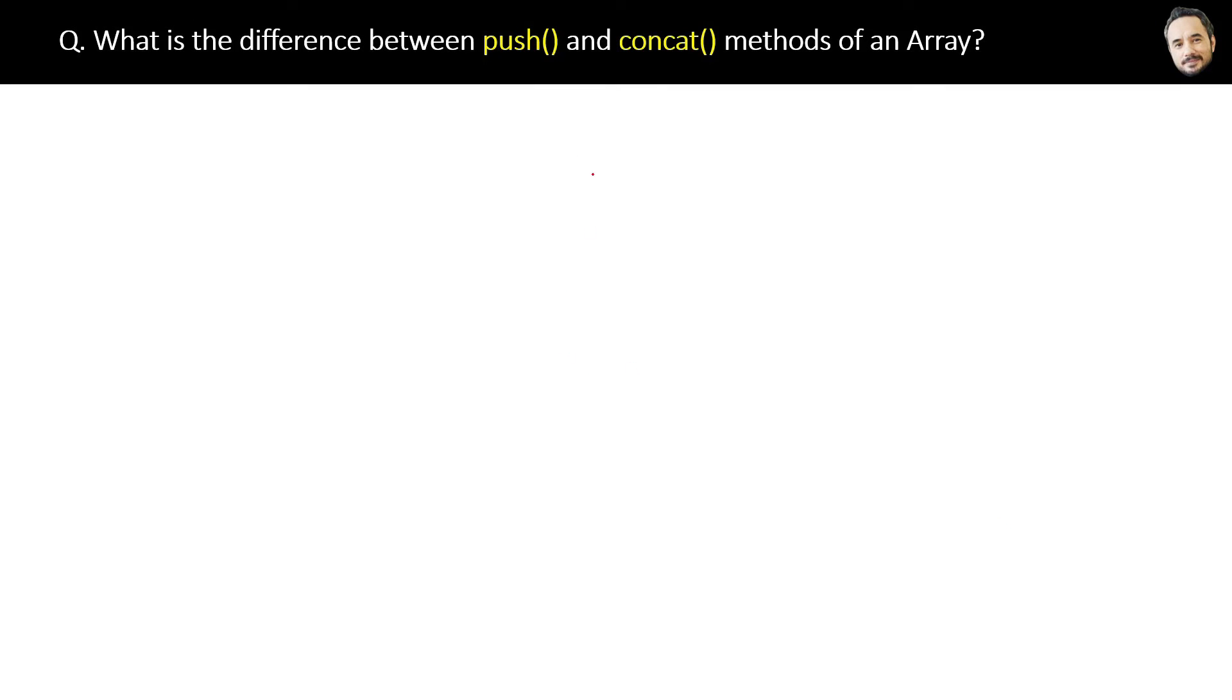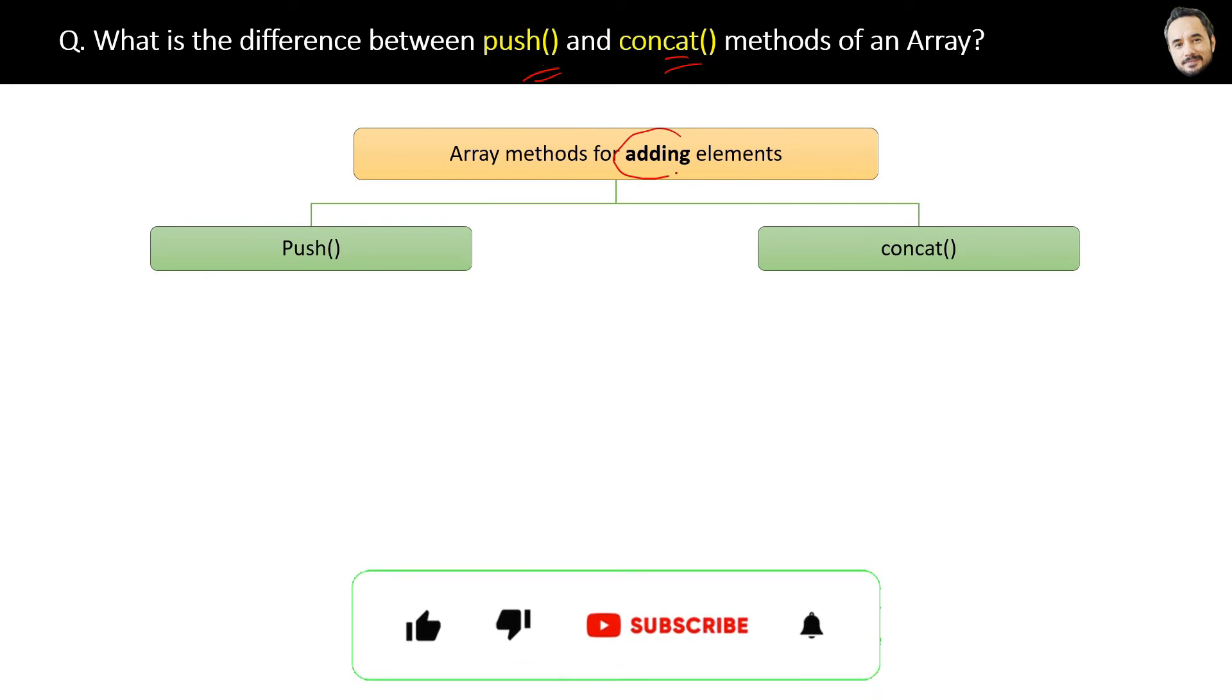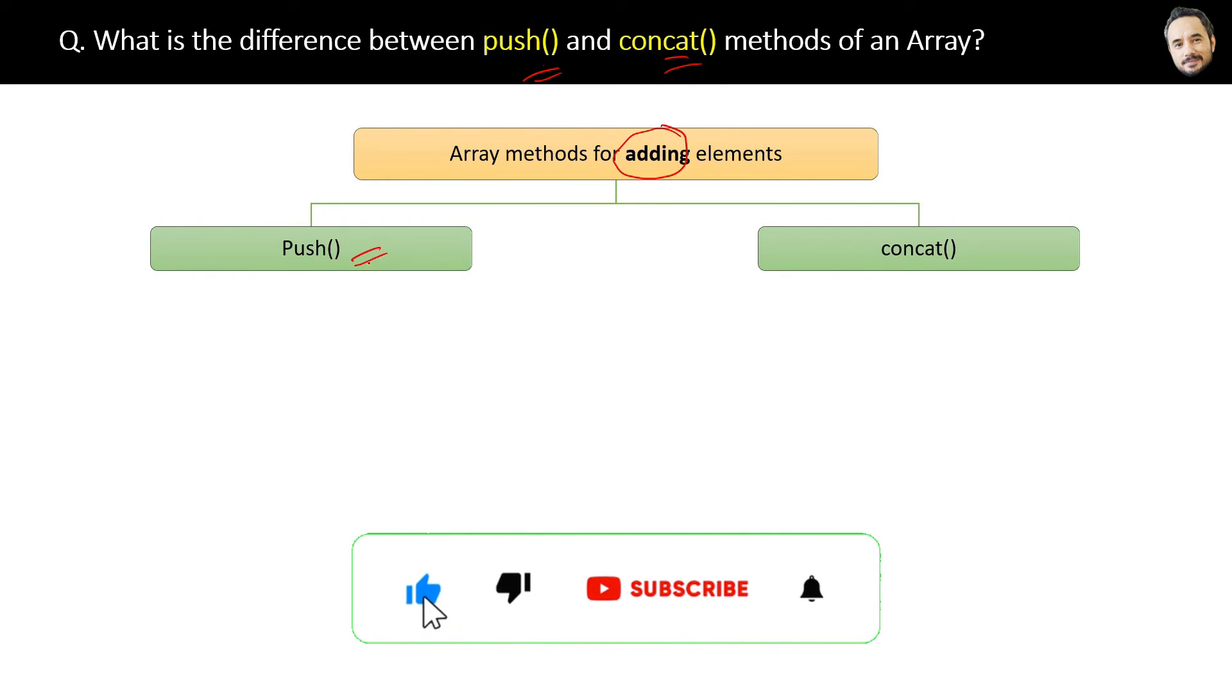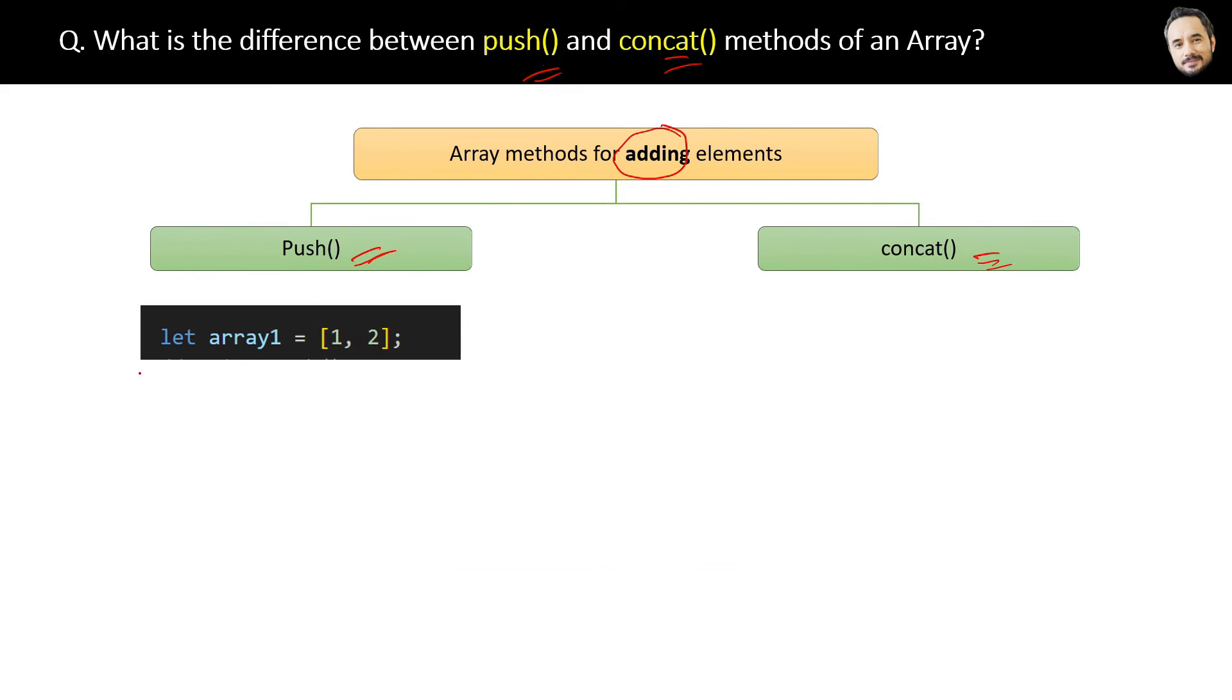What is the difference between the push and concat methods of an array? Basically, we have two methods for adding elements to an array, and they are push and concat methods. Let's see the push method first.